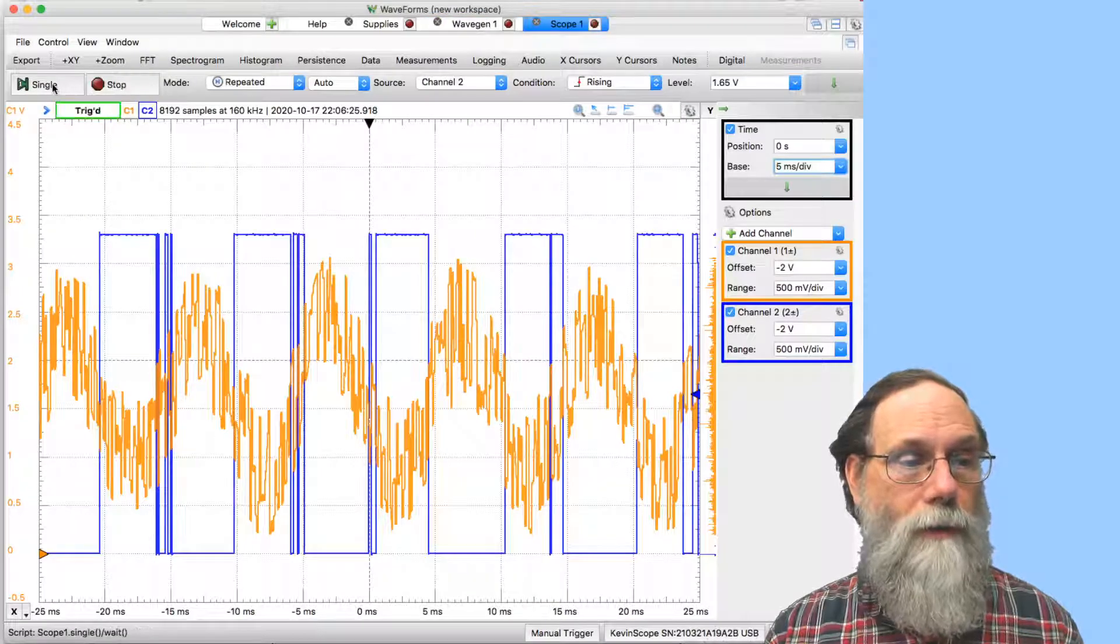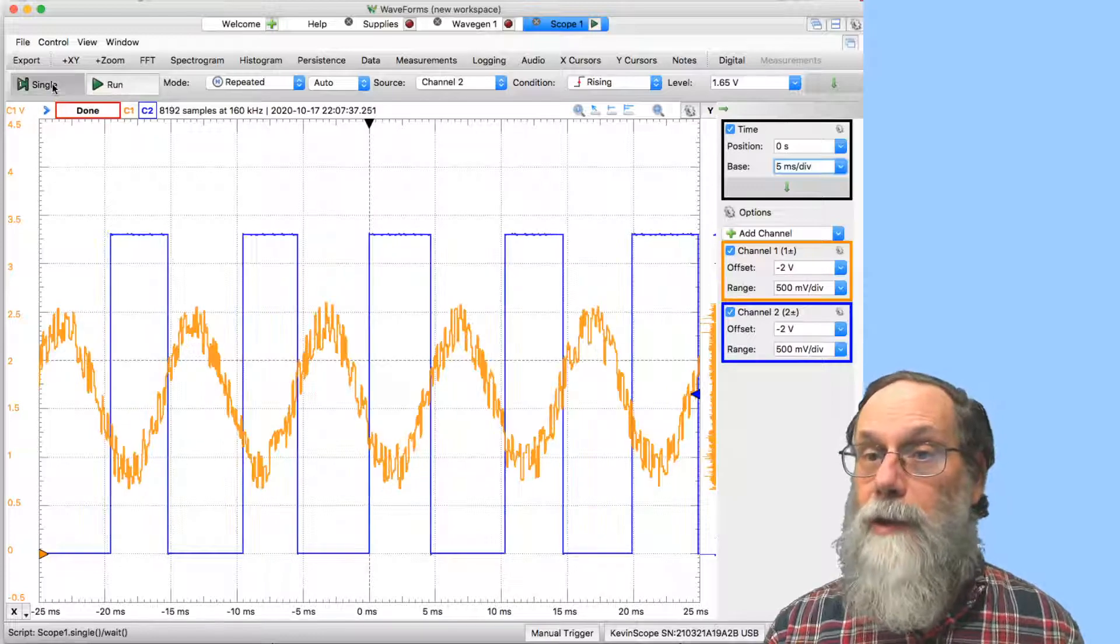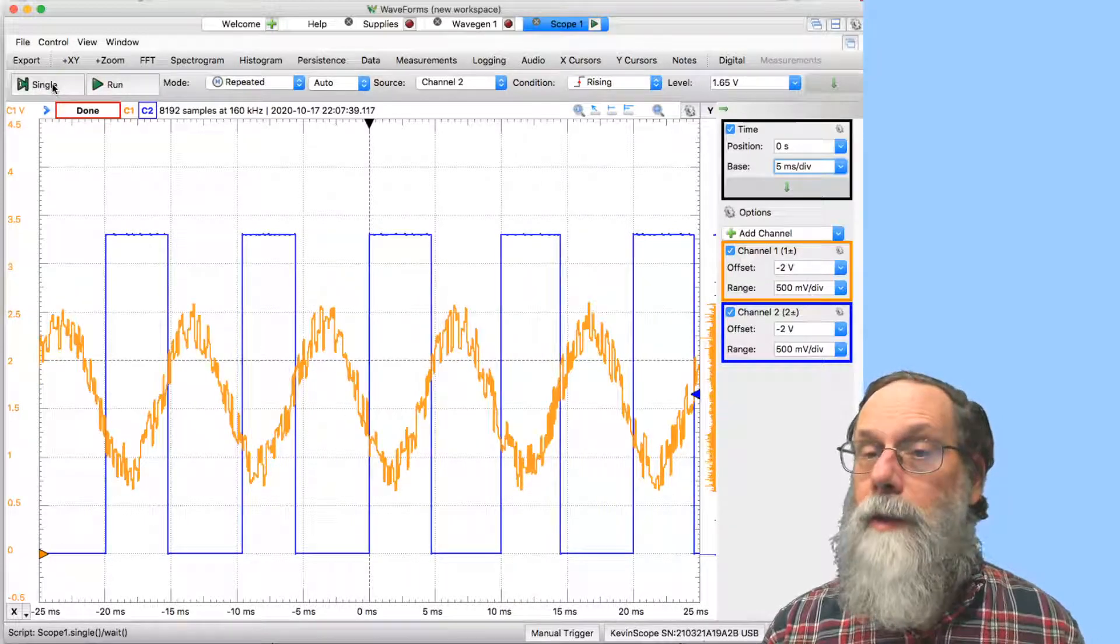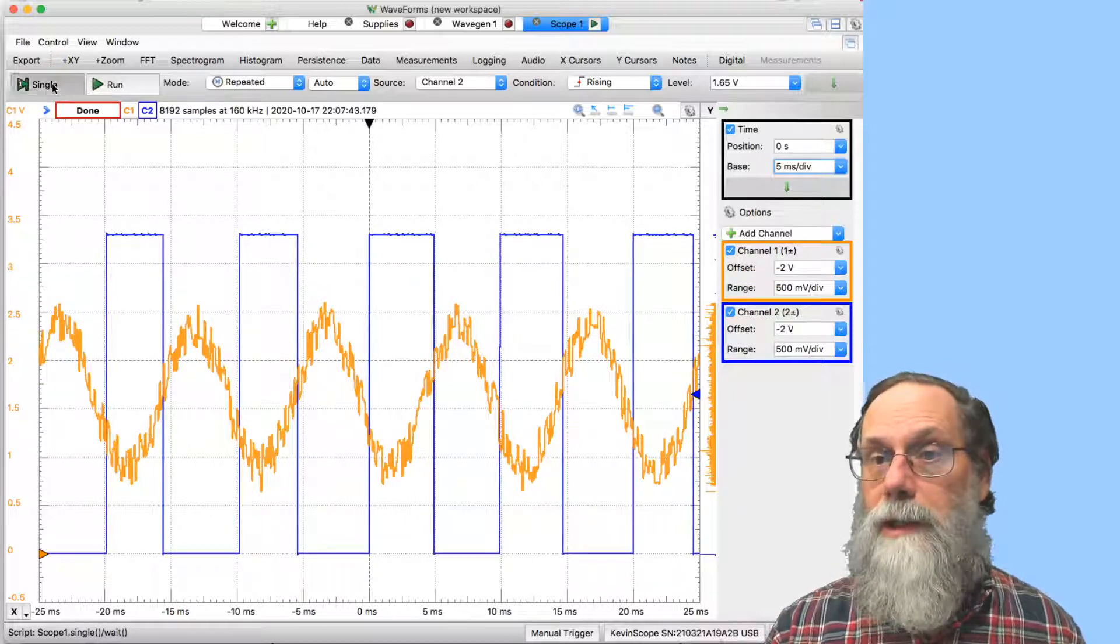So we'll do a single run here. Looks clean. Keep doing single runs. And each time you can see the noise waveform changes, the square wave is always clean. It's always just one transition on each edge.